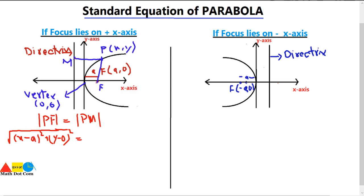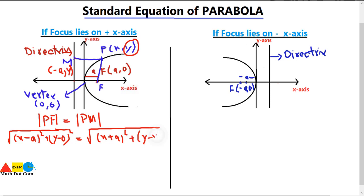Now, what is PM? The coordinates of M will be on the directrix line, which cuts the x-axis at minus A — because if the focus cuts the x-axis at A, the directrix cuts it at minus A, as the directrix is opposite to the focus but equal in magnitude. The y-coordinate of M is the same as that of point P. So for PM we use the distance formula: the square root of (x plus A) squared plus (y minus y) squared.